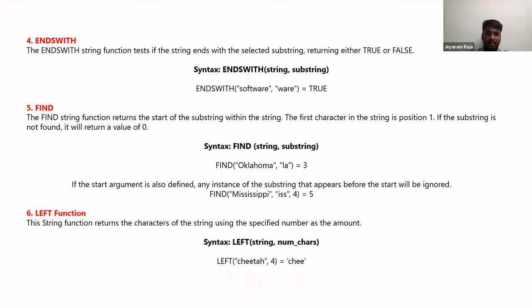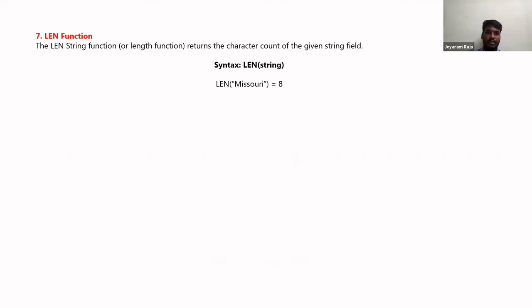The LEFT function prints only the first specified number of characters from a string. For example, LEFT('Missouri', 4) returns the first four characters. This is useful when there are space constraints in a dashboard — instead of showing the full city or state name, you can use LEFT to display just the first two or three characters.